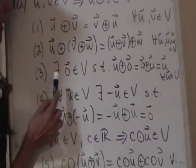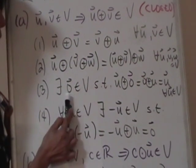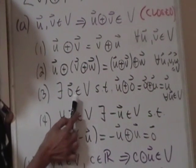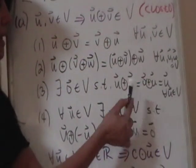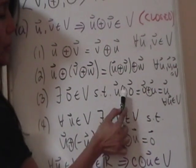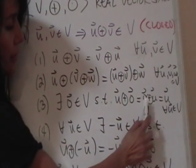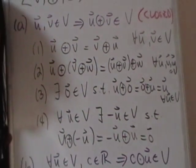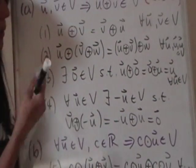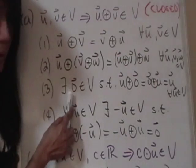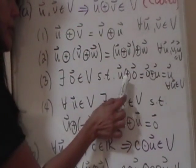The third condition requires that there exists a zero vector in V — really better called an identity element for circle-plus. The property states that zero circle-plus U equals U circle-plus zero equals U, preserving the identity of U. It's like the additive identity for real numbers. Note that in examples, the zero vector won't necessarily look like a numerical zero; it's really just a symbol for the identity element under circle-plus.